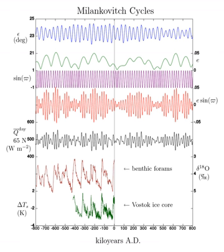This increases the magnitude of seasonal changes. The relative increase in solar irradiation at closest approach to the Sun compared to the irradiation at the furthest distance is slightly larger than four times the eccentricity.